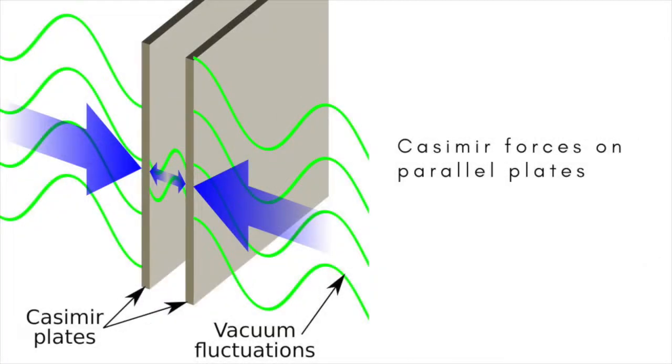Another measurable consequence of the fields associated with zero-point energy is the Casimir effect, a force that appears between two closely spaced metal plates.